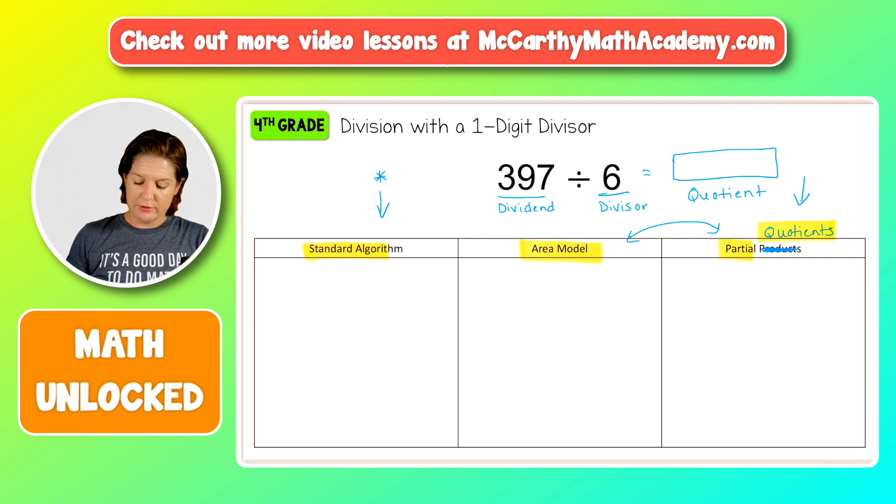So let's go ahead and do this. We're going to start with standard algorithm. Okay. The way that we set that up is we have our dividend, which goes inside of this little, like under this bridge kind of looking thing. And then our divisor goes outside.